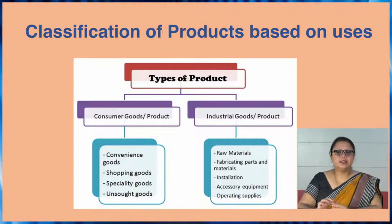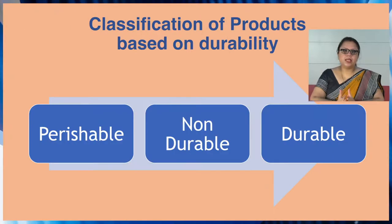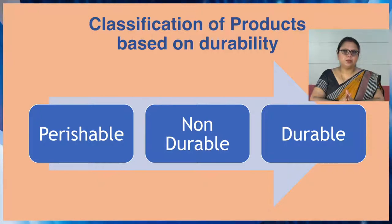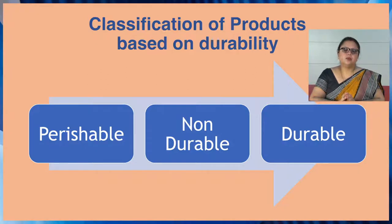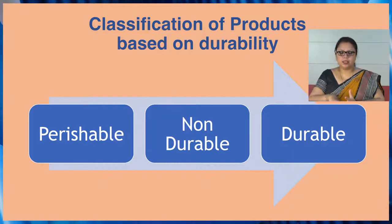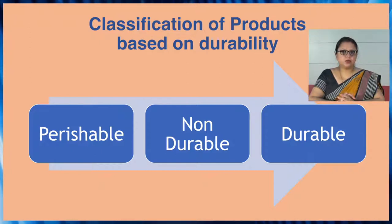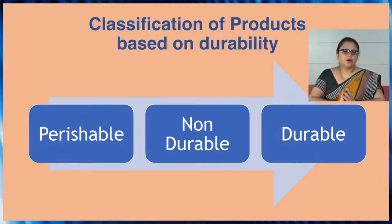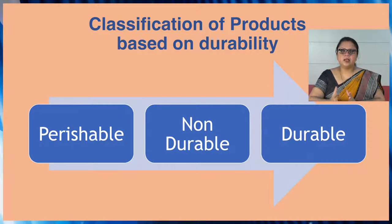Next, we will discuss product classification based on durability. Products can be classified into three categories: perishable products, non-durable products, and durable products. Perishable products have a very short life and cannot be stored for a long time — examples include food items, vegetables, fish, flowers, and newspapers. Non-durable products last for only a few uses and get depleted on consumption — fast moving consumer goods like toothpaste, soap, and powder are examples, getting used up within a month and requiring repurchase.